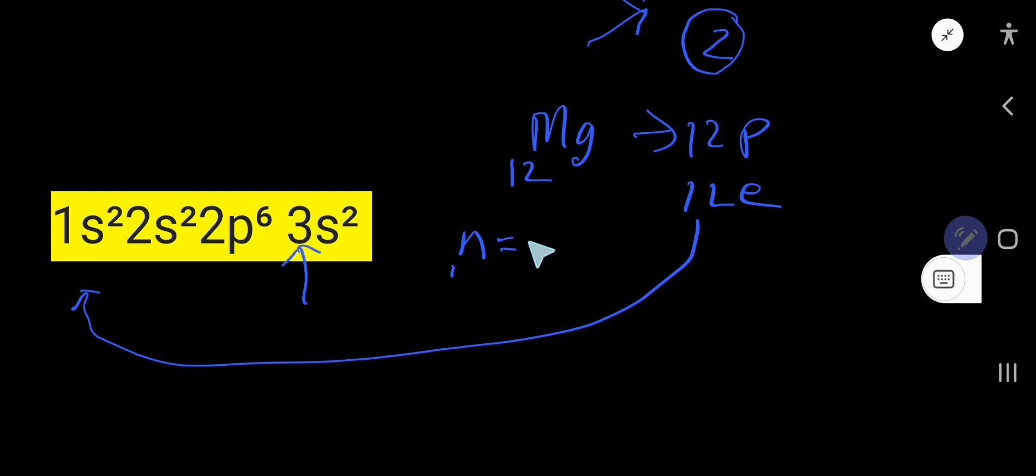The highest value of principal quantum number n equals 3. For n equals 3, we get 3s. In 3s, we have 2 electrons. These 2 electrons are valence electrons. So magnesium has 2 valence electrons.